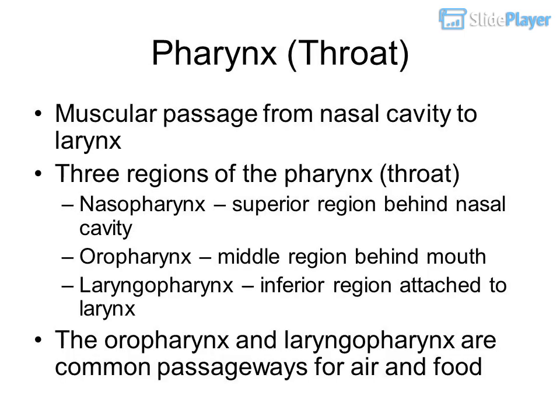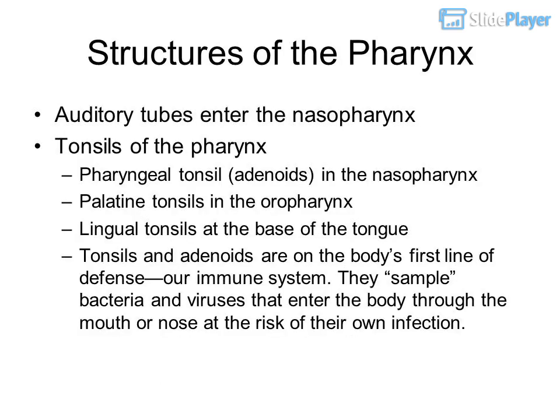The pharynx, or throat, is a muscular passage from the nasal cavity to the larynx. There are three regions of the pharynx: the nasopharynx, the superior region behind the nasal cavity; the oropharynx, the middle region behind the mouth; and the laryngopharynx, the inferior region attached to the larynx. The oropharynx and laryngopharynx are common passageways for both air and food.